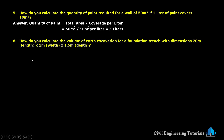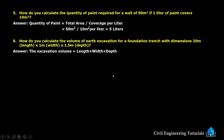Next question: how do you calculate the volume of earth excavation for a foundation trench with dimensions 20 meter length, 1 meter width and 1.5 meter depth? The excavation volume formula is length × width × depth: 20 × 1 × 1.5, giving us 30 cubic meters.